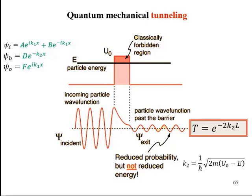It can also be concluded that T is the function of U₀, E, and L. It decreases with increase in L and U₀, while it increases with increase in E and it becomes unity when E equals U₀. This is known as the phenomenon of tunneling.